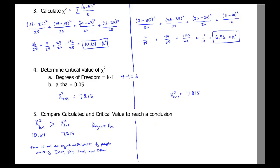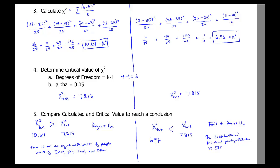For Problem B, where we had an actual expected distribution with unequal percentages: the test chi-squared was 6.96 and the critical value is 7.815. The critical value is bigger, so we fail to reject the null hypothesis. The null hypothesis said 35% Democrat, 35% Republican, 20% Independent, and 10% Other or None. Our conclusion is that the distribution of political affiliation matches what the null hypothesis stated.